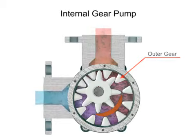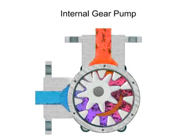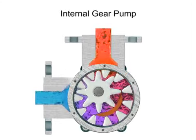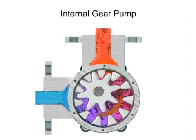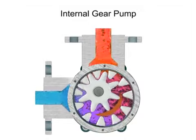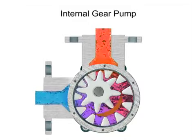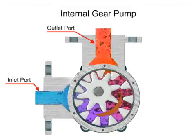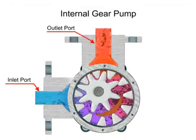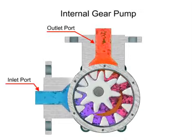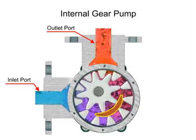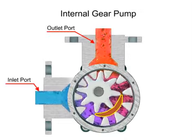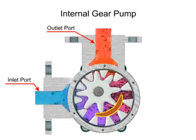As the inner gear rotates, it meshes with and moves the outer gear. Liquid is trapped in the gear spaces and carried from the inlet to the discharge. A stationary crescent-shaped divider separates the intake and discharge portions of the fluid.